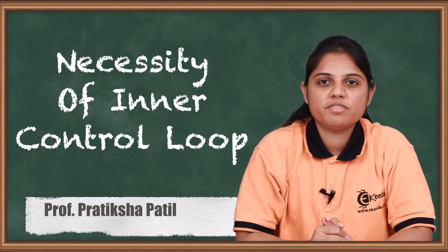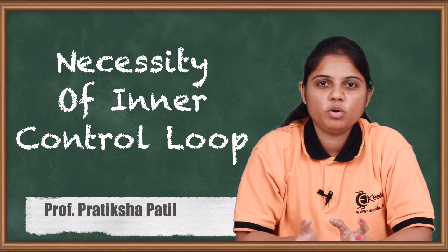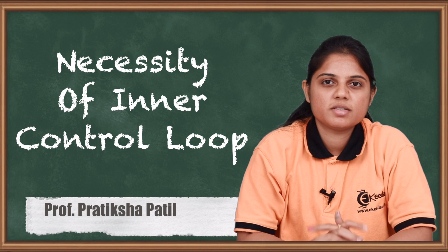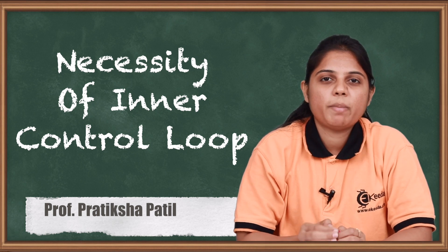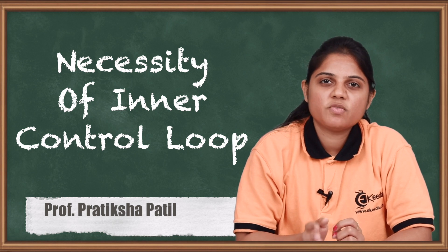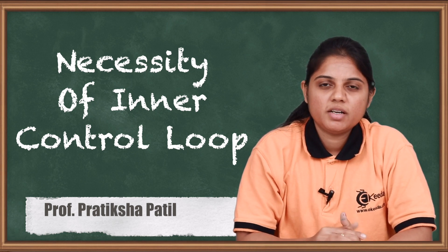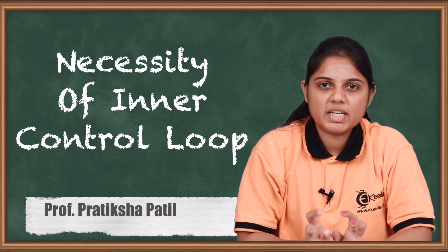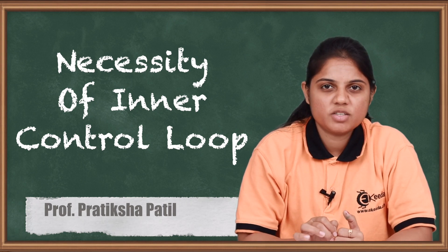In a previous video we have seen the closed loop control of a DC motor, speed control of a DC motor by using an inner loop. Now in the inner loop what we do, we measure the speed as well as the armature current. Now what is the requirement of this inner loop? That we are going to see in this video.